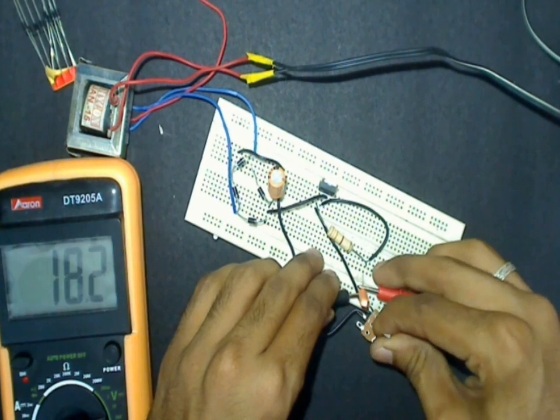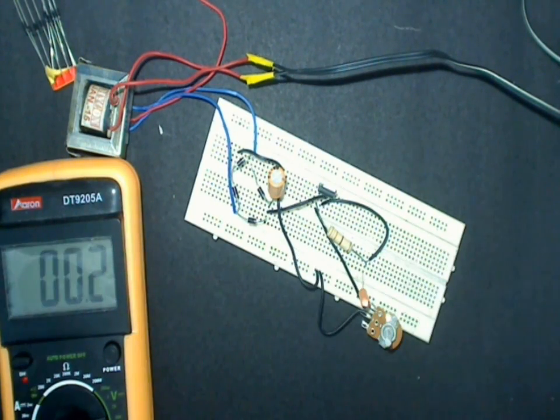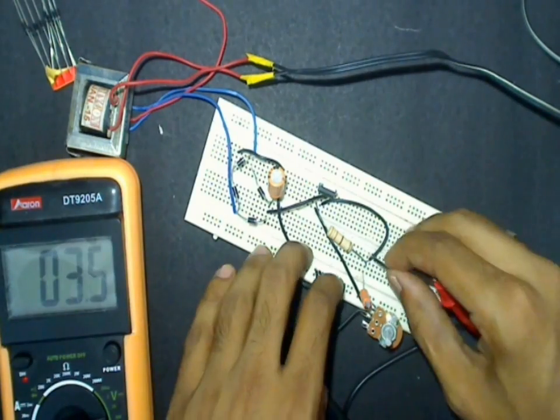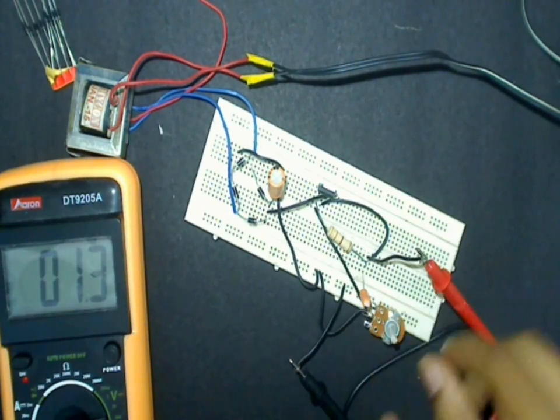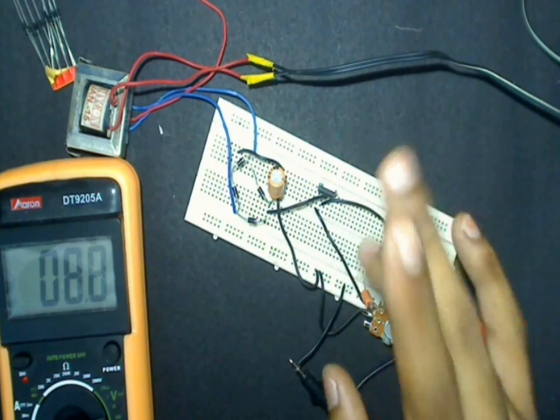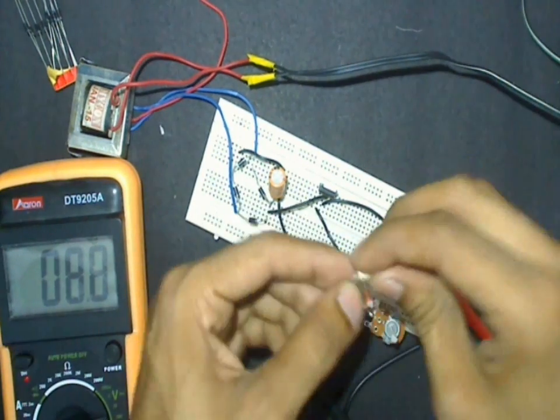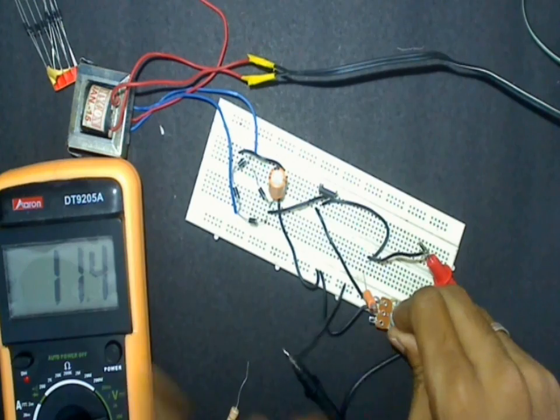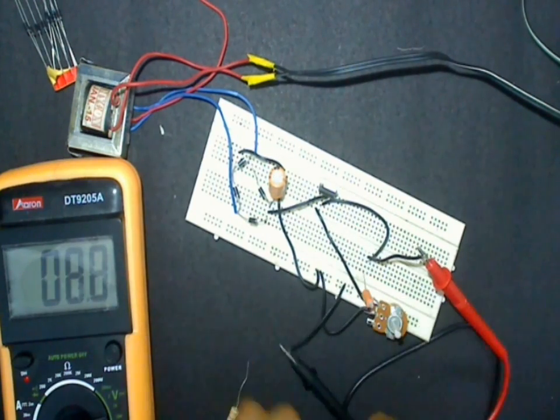As you can see the output is varying by turning the pot. Now if I remove the feedback resistor and check the output voltage, you can see that the output voltage stays always between 8.8 volts to 11.4 volts. And we won't be able to vary apart from these values.